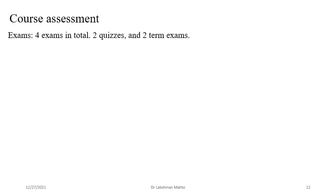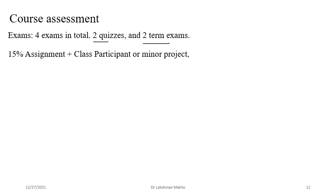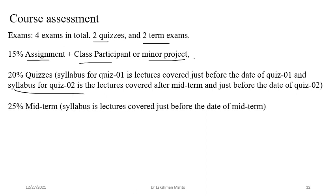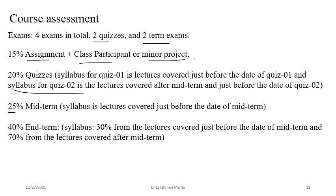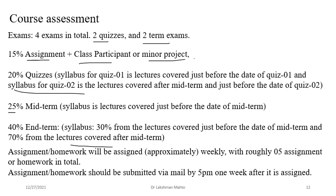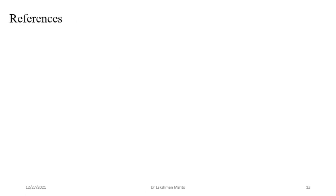Coming to course assessment: there are four exams in total — two quizzes and two term exams. 15% of marks come from assignments, class participation, or projects assigned from time to time. 20% comes from quizzes, 25% from midterm, and 40% from end-term. Apart from exams, assignments and homework will be assigned with a one-week deadline. All information is available in Google Classroom.